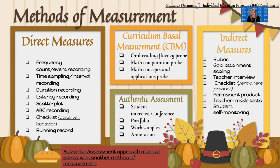An example of a checklist for a direct measure is if you have a word list and you are actually listening to them read those words aloud — then you could check off whether they read each word correctly. That would be an example of a direct measure checklist. Stephanie, Doug, and Denny Paul can also chime in with more examples, because those are reading examples from what I do.